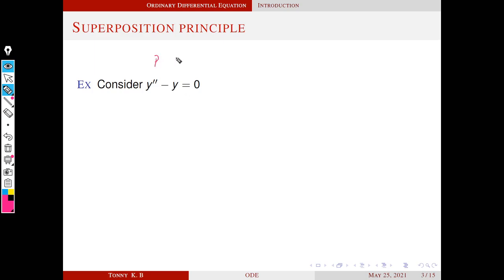What is p and q here? p equals zero — the coefficient of y dash is zero — and q is minus one. r equals zero, of course. So this is a homogeneous differential equation.